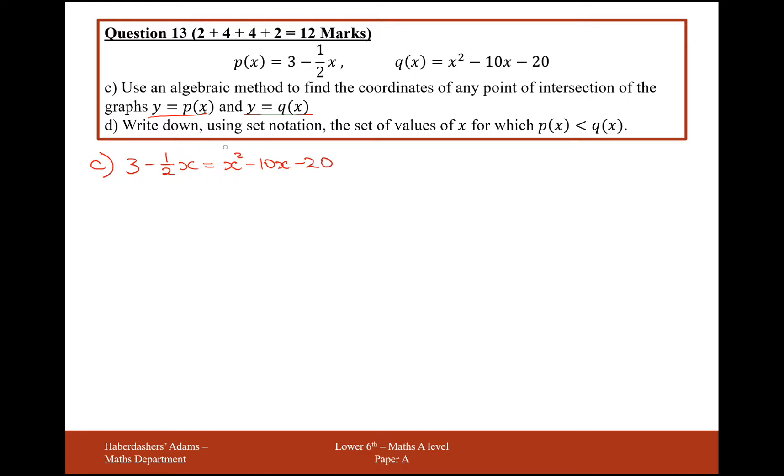So x squared minus 10x minus 20. So let's move everything onto one side and make a quadratic. So we get x squared. We'll add half of x. That'll be minus 20 over 2. Add another half, you get minus 17 over 2x. And take away 3, you get minus 23. Let's make all these whole numbers because it might be a little bit easier. 2x squared minus 19x minus 46.